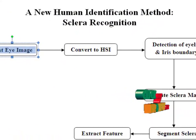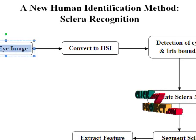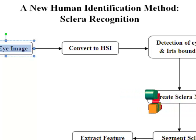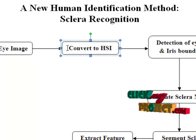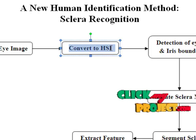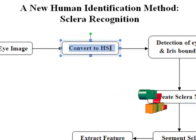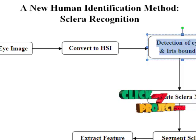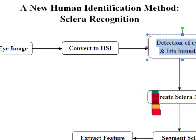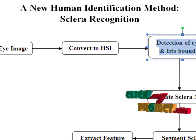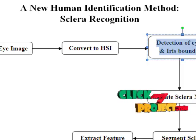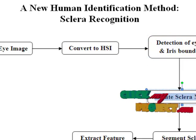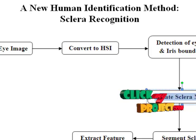Now let's see the flowchart of the proposed method. The given test eye images in RGB color space are converted to HSI color space. HSI stands for Hue-Saturation-Intensity model. After this conversion, the eyelid and iris boundaries are detected, and those portions are removed from the test color eye image.